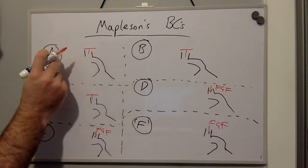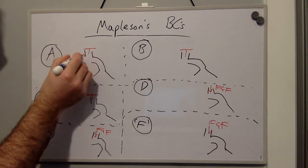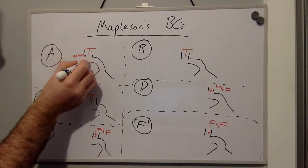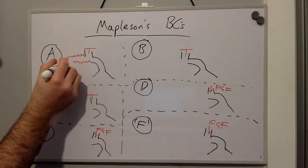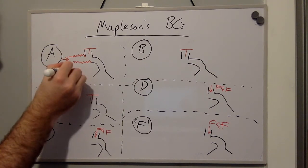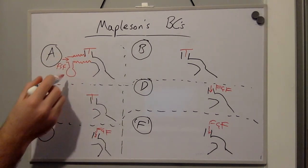For Mapleson A we have the longer tubing which exists in the circuit here. The fresh gas flow comes in here and the reservoir bag exists here.